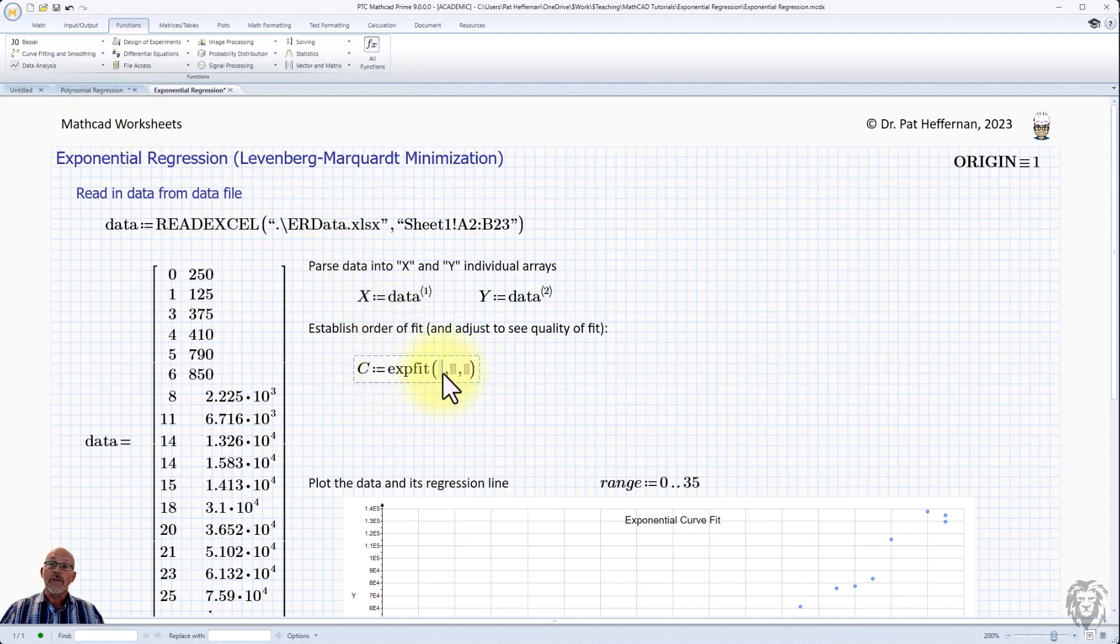Now it offers three parameters. You need the first two. The third one is if you have some guess values that you'd like to input for the different coefficients. I don't have those, so I can delete that.